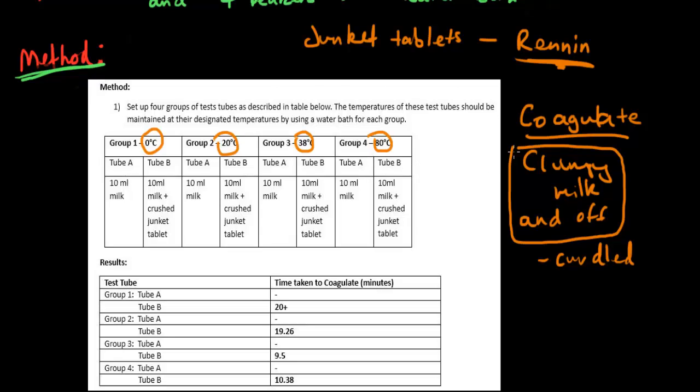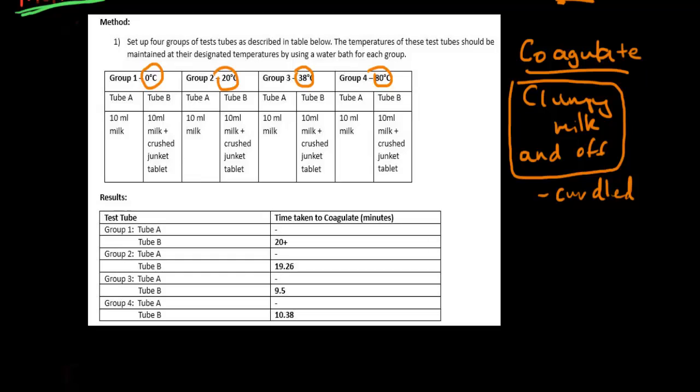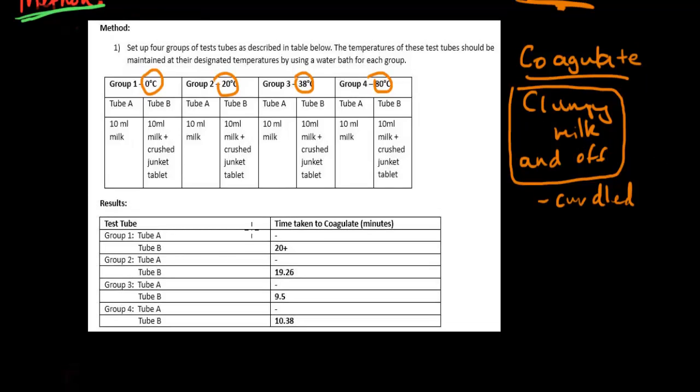In my results, for all the ones without renin, it did not curdle for a long period of time, so we just left it. We knew it would curdle eventually, but without renin it takes a long time. As you can see in my results, we've left that out. Same with test tube A for each group, which contains just milk.